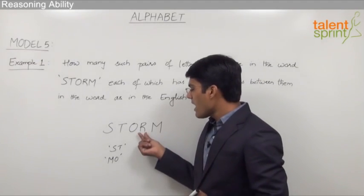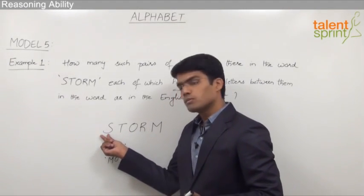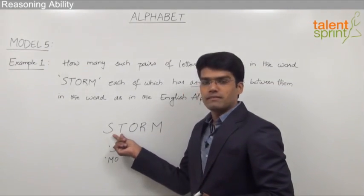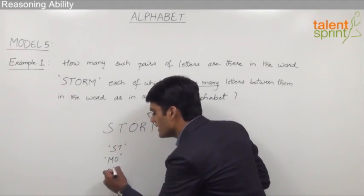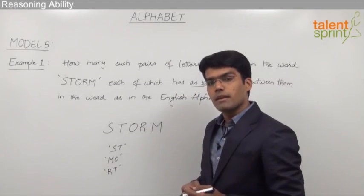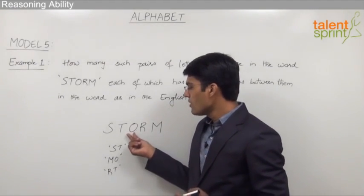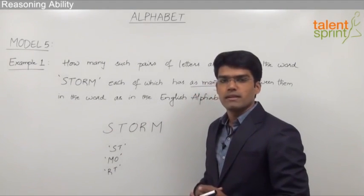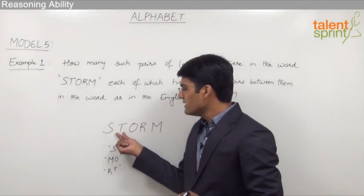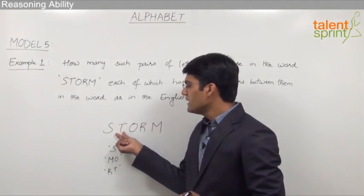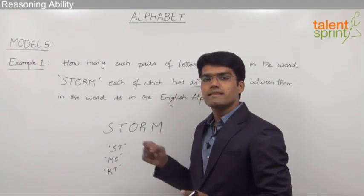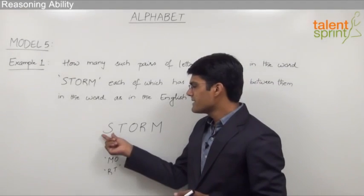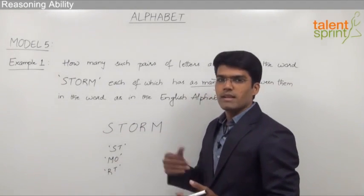Going by the letter R, reading the alphabet: R, S, T, U — we can see that R and T make a correct pair. So R and T can be taken as the third possible pair. Now checking O: O, P, Q — which does not match any of the given letters. And with T, we have T, U, but the next letter in the word is S, so that cannot be treated as a correct pair. Since S is the only letter left, that cannot be considered now.